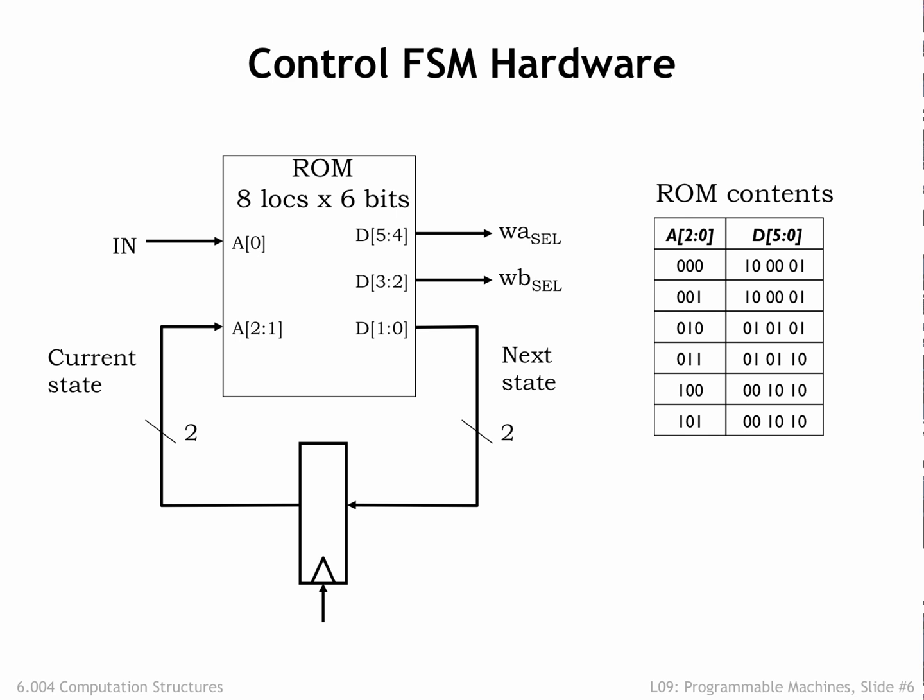Each ROM location has the appropriate values for the six output bits: two bits each for WA_SEL, WB_SEL, and next state. The table on the right shows the ROM contents, which are easily determined from the table on the previous slide.